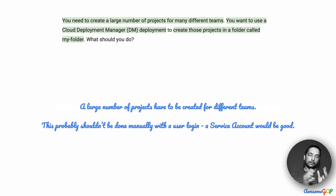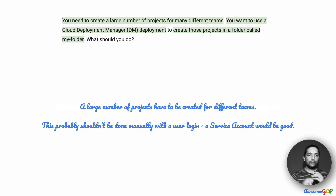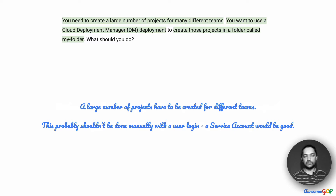IAM — Identity and Access Management — defines who can do what on which resource. We know what needs to be done: create a project. We know where: inside a folder, which is the resource. Now the question is who can do it? Given that there are many projects and many teams, I would ideally prefer that this is not done manually by a person who logs in. If it has to be automated, done by a system, then it is preferable that we have a service account.